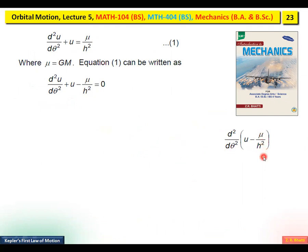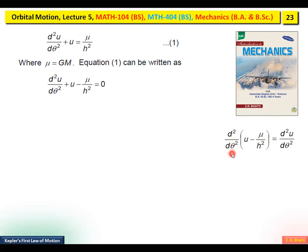Now, μ/h² is a constant — μ is constant and h² is constant — so when we take the derivative of (u − μ/h²), the constant term vanishes. Therefore, taking d²/dθ² of (u − μ/h²) gives d²u/dθ², because μ/h² is constant and its first and second derivatives are equal to zero.